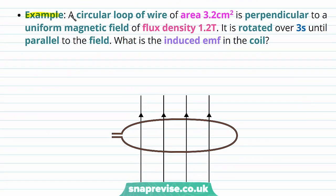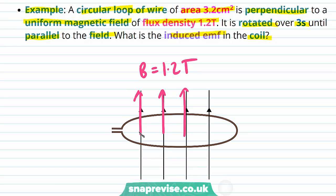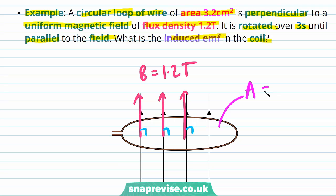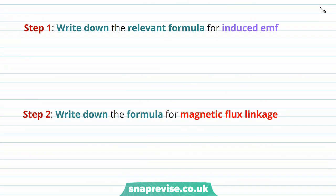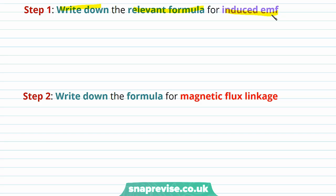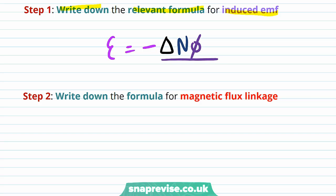Let's do an example. A circular loop of wire of area 3.2 cm² is perpendicular to a uniform magnetic field of flux density 1.2 tesla. It is rotated over 3 seconds until it's parallel to the field. What is the induced EMF in the coil? We know that initially the magnetic flux density is 1.2 tesla and it is perpendicular to the coil, the area of the coil is 3.2 cm², and delta T is 3 seconds. Step 1 is to write down the relevant formula for induced EMF. This is Faraday's law stating that the induced EMF is equal to minus the change in magnetic flux linkage, which is N times phi, divided by delta T.